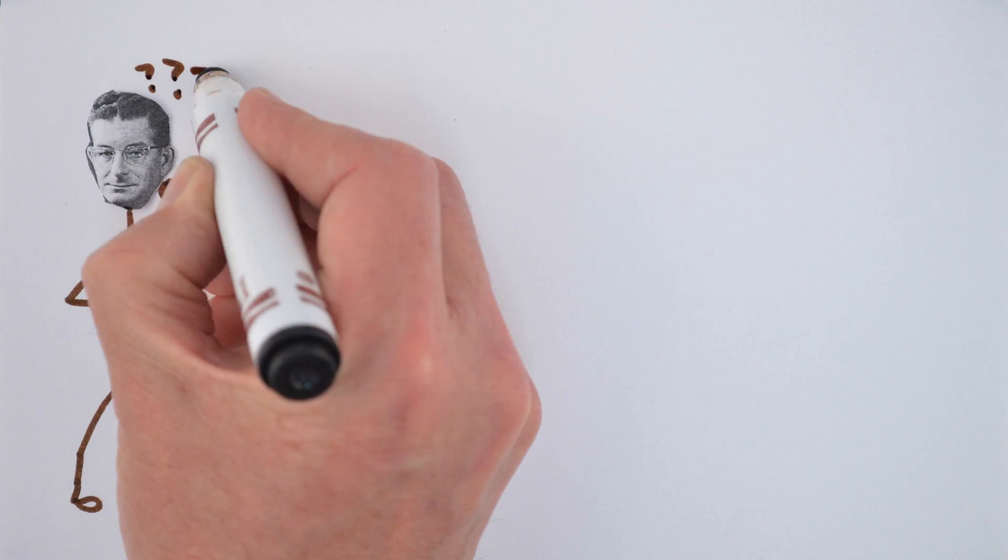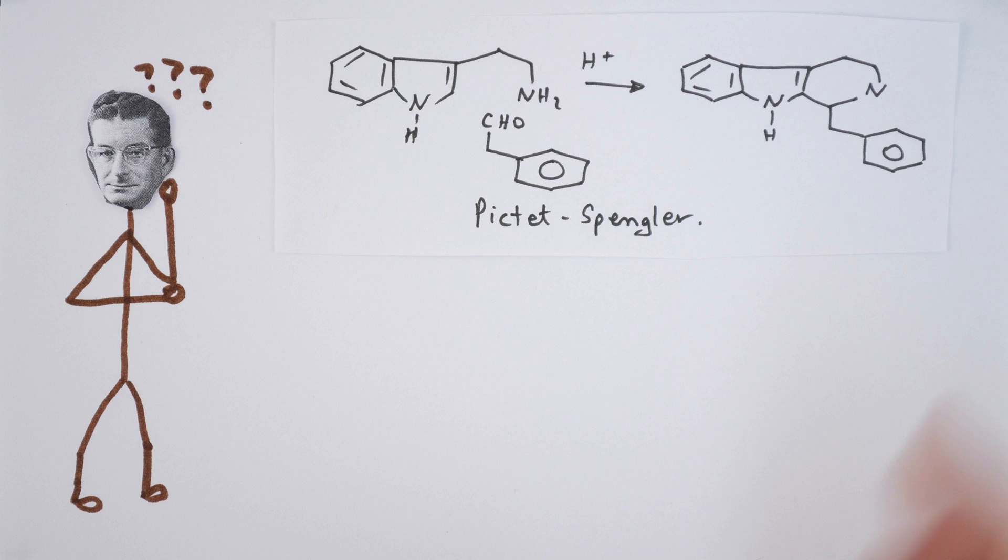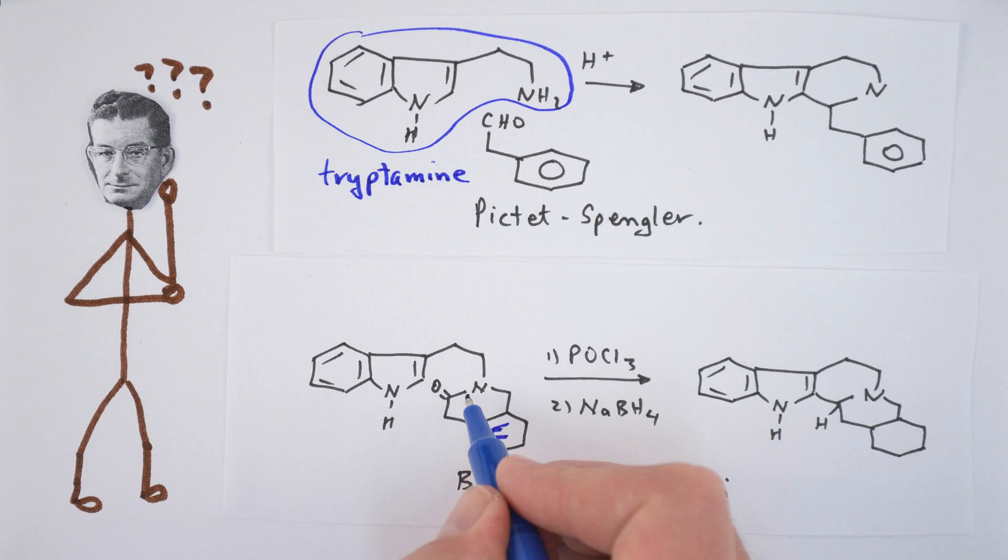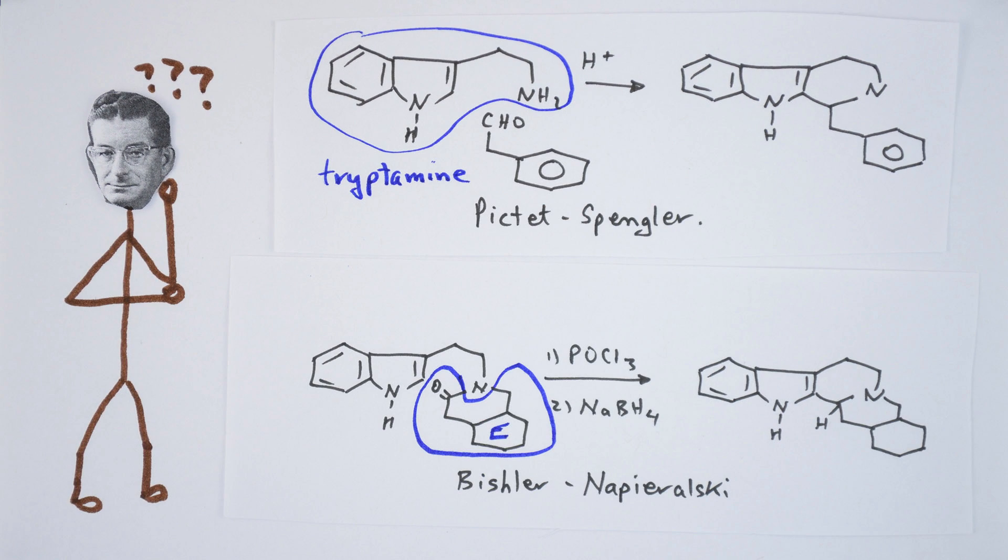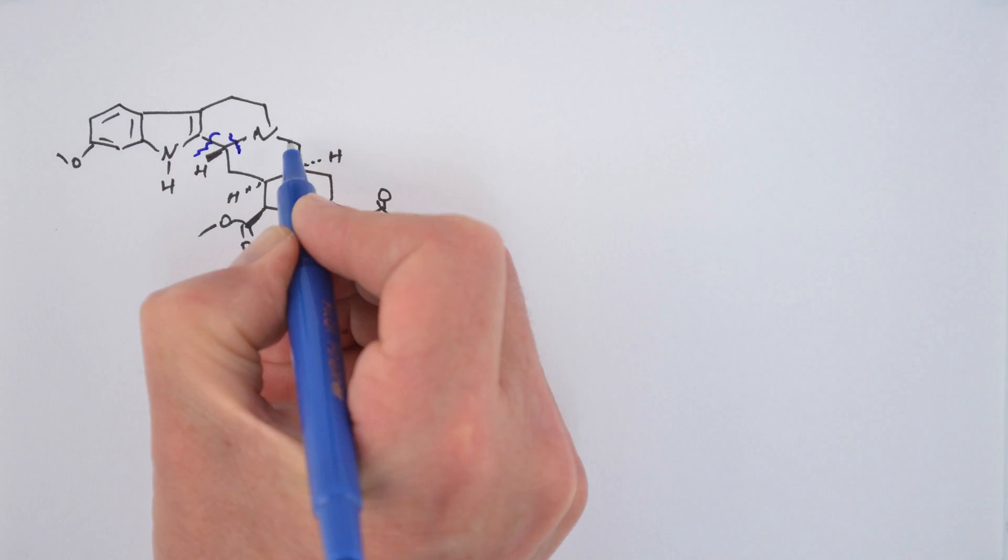As Woodward contemplated how he was going to synthesize his target molecule with its six chiral centers, there were several things that he knew about indole alkaloids that are worth mentioning. The first is that he could probably rely on some version of the Pictet-Spengler reaction and the Bischler-Napierowski reaction to connect the top tryptamine portion of the molecule to the bottom ring E portion of the molecule together. These two reactions have really neat mechanisms and we'll go more in depth in later videos. Knowing these two reactions allowed Woodward to make the following disconnections.